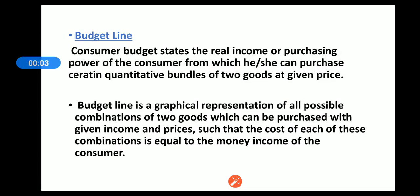Students, in the previous class we discussed indifference curves and their properties. At last, we saw that two indifference curves cannot intersect each other, because if they did, there would be a situation where two indifference curves show the same level of satisfaction, which is impossible. Different indifference curves give different levels of satisfaction — higher indifference curves give higher satisfaction and lower ones give lower satisfaction.